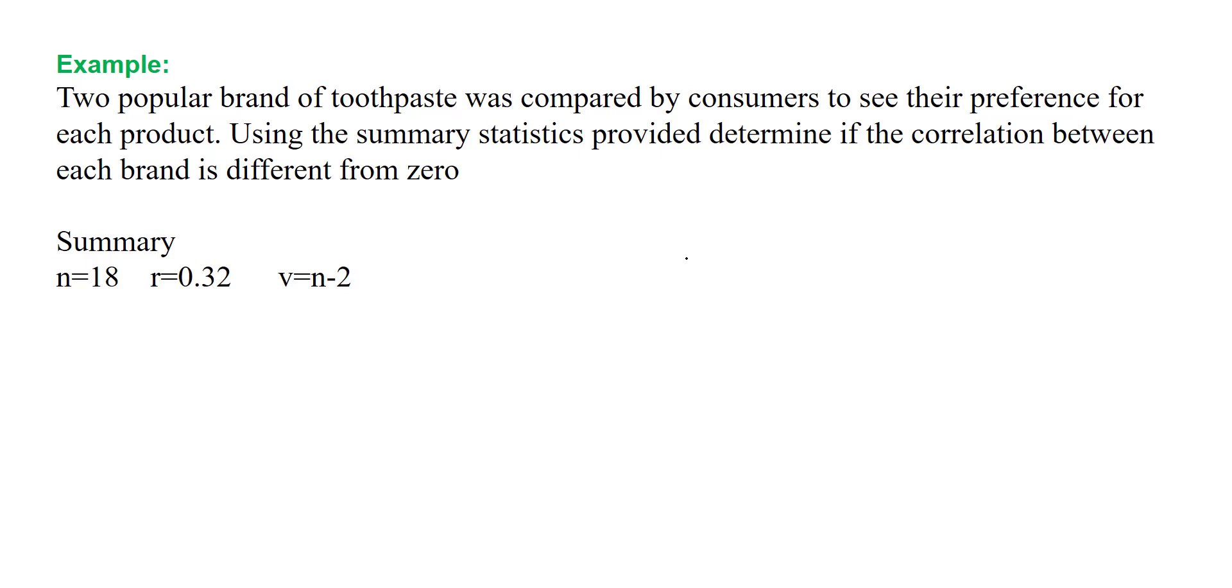First, we'll set up our null and alternative hypotheses. Our null hypothesis is H0: r equals 0 versus H1: r does not equal 0. We weren't given an alpha level in this example, so we'll use a 90% confidence interval, so alpha equals 0.10.